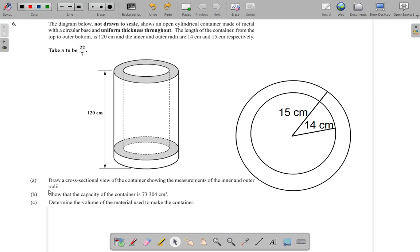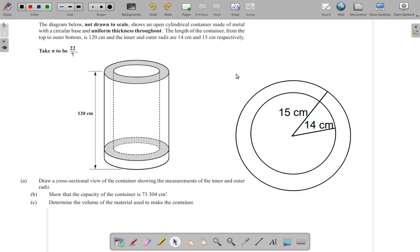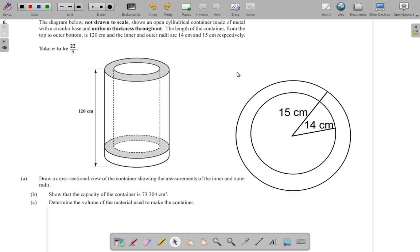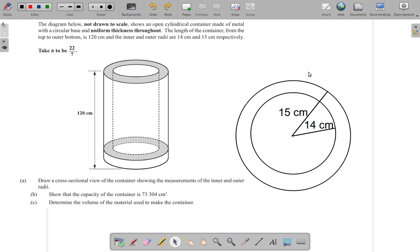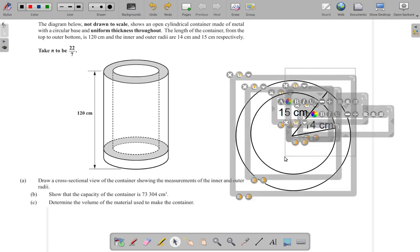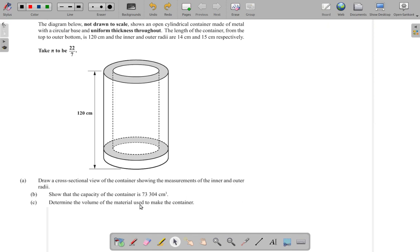Part B of this question says, show that the capacity of the cylinder is 73,304 centimeters cubed. Let me just get rid of what was done here before, these diagrams, to make some space for the calculations.